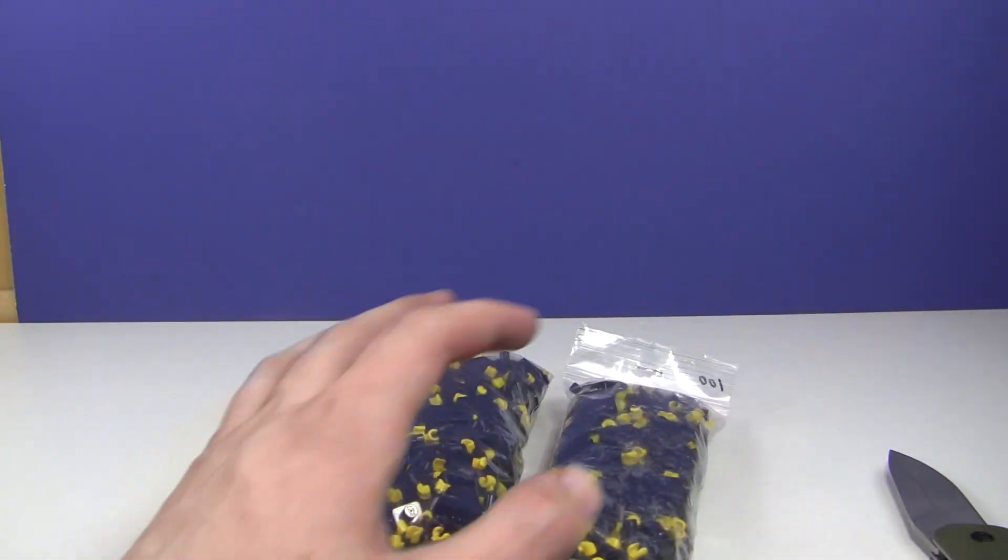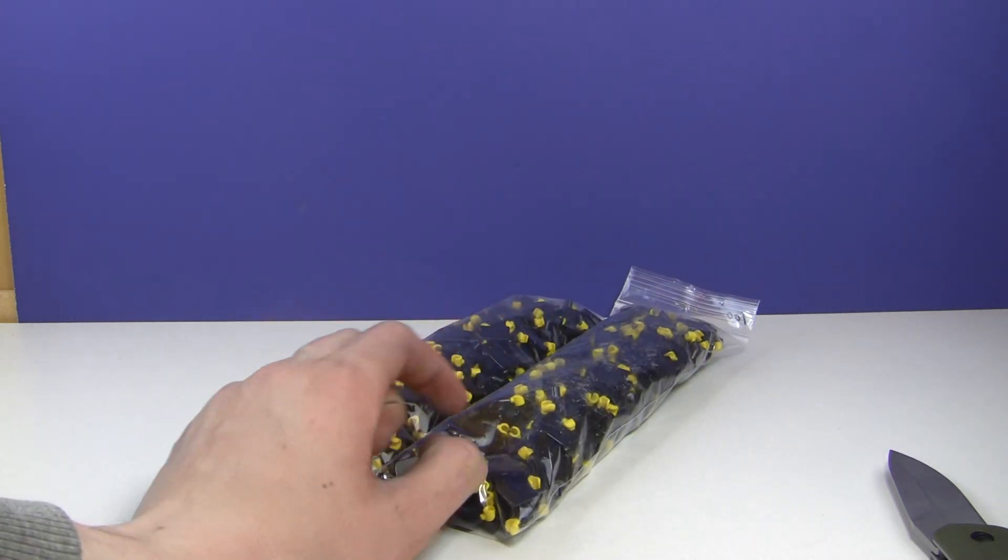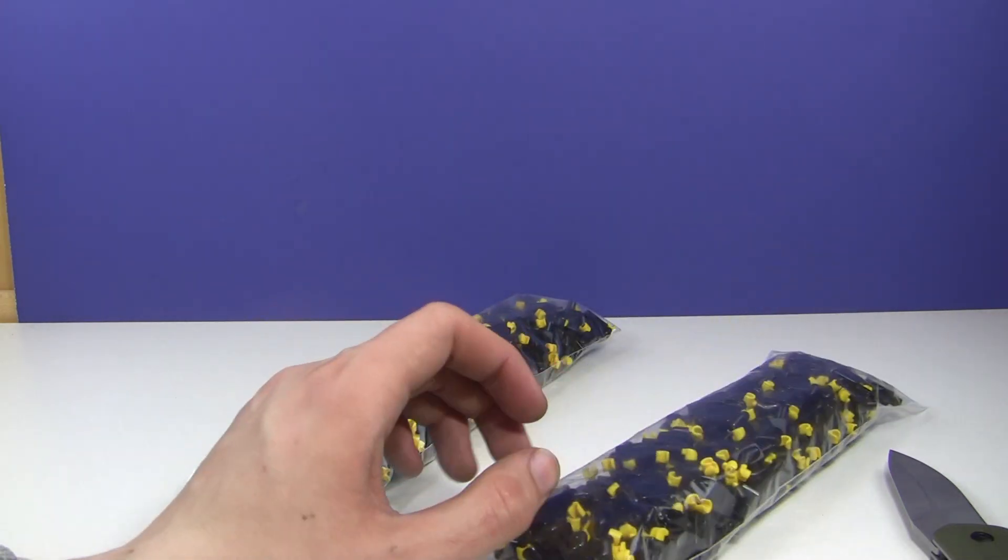So there's 200 black torsos here. These have, let's see, yellow hands, and there's actually no printing on these.